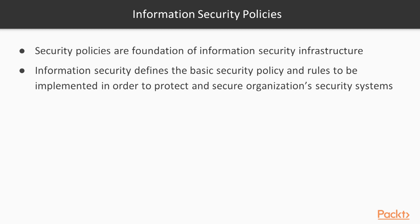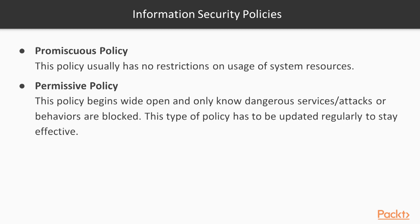Promiscuous policy usually has no restrictions on the use of system resources — for example, an environment where there is no password on any folder or file in your system. Permissive policy begins wide open and only dangerous services or attacks or behaviors are blocked. This type of policy has to be updated regularly to stay effective — only highly vulnerable loopholes are blocked while other services remain open.